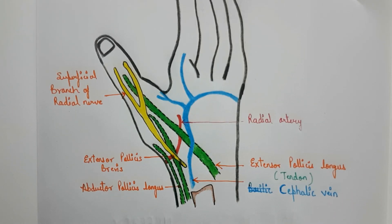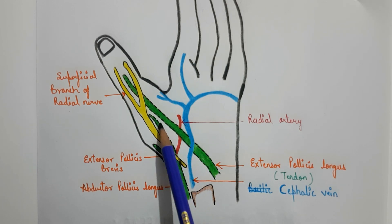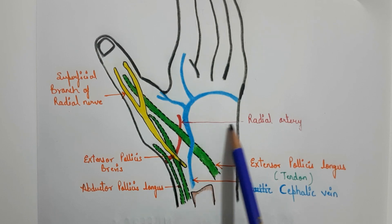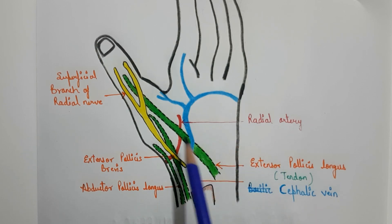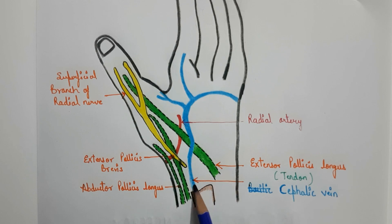Now let us look at the contents in the diagram. There are two types of contents: superficial and deep. The deep content includes the radial artery. The superficial content includes the superficial branch of the radial nerve and the cephalic vein. That was all about the anatomical snuff box. If you found this video interesting, please like, share, subscribe, and comment. Thank you — signing off from Love for Anatomy.